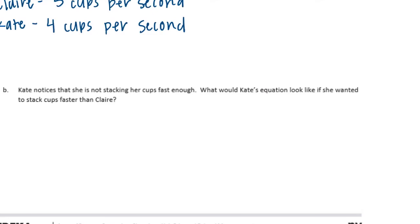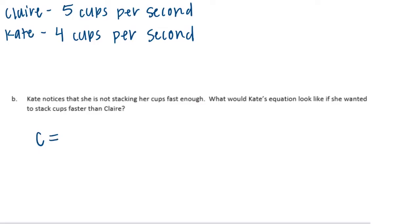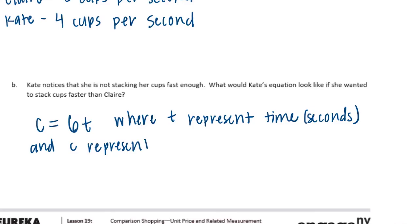And B, Kate notices that she is not stacking her cups fast enough. What would Kate's equation look like if she wanted to stack cups faster than Claire? So Kate wants to stack cups faster than Claire, so faster than 5 cups per second. And faster than that would be 6 cups per second. So we could say that the cups would be equal to 6T. So 6 for each second is equal to the amount of cups. And we could explain that out. We could say where T represents time. Let's specify in seconds. And C represents the number of cups being stacked.